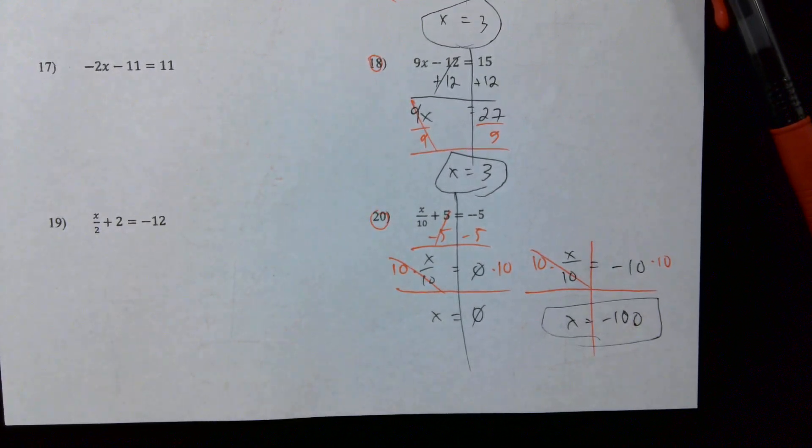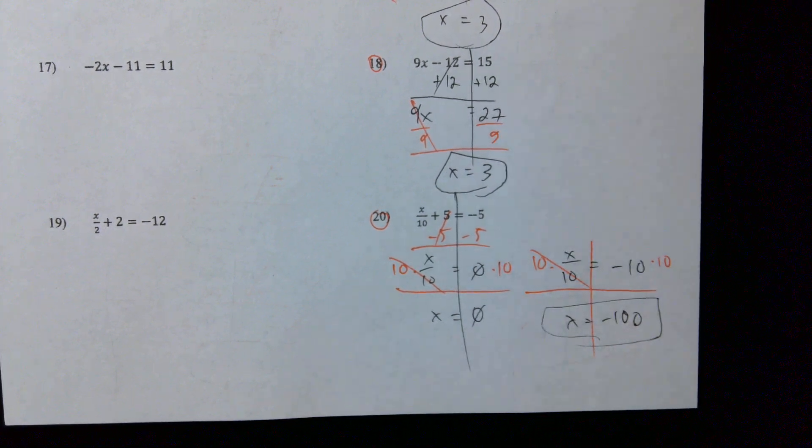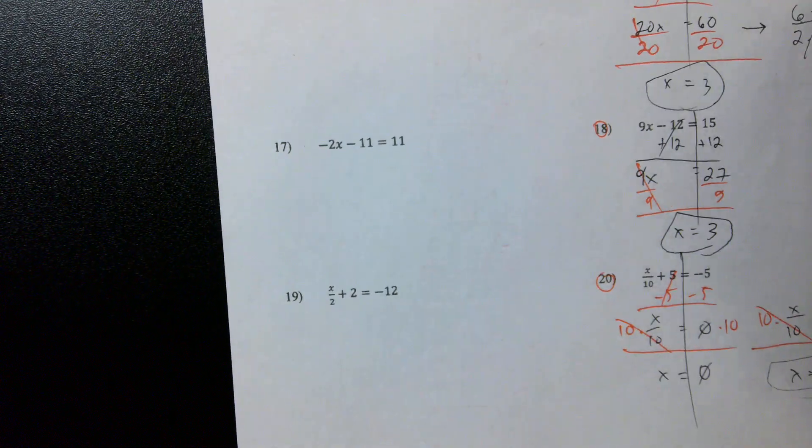So we could have really really big values of x, we could have really really small values of x, we could have fractions like we saw in the warm-up, we could have positives, we could have negatives. x can be anything.